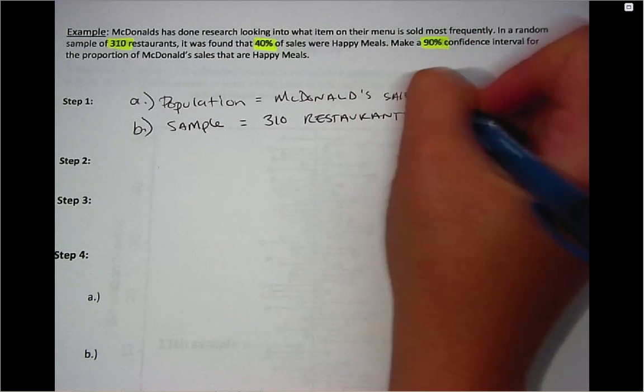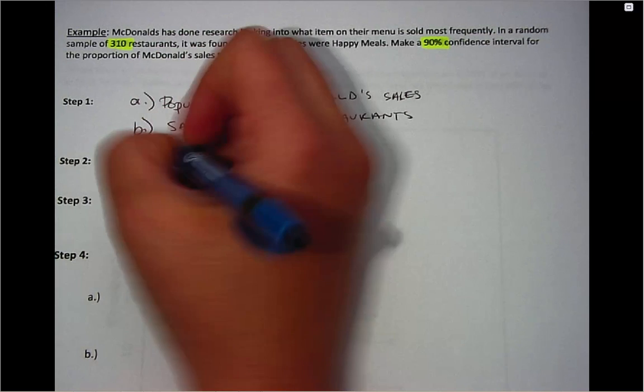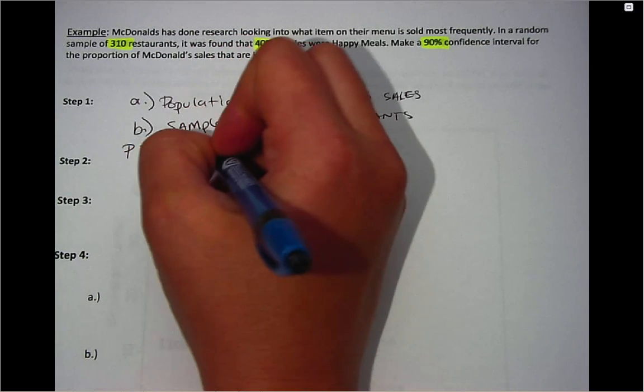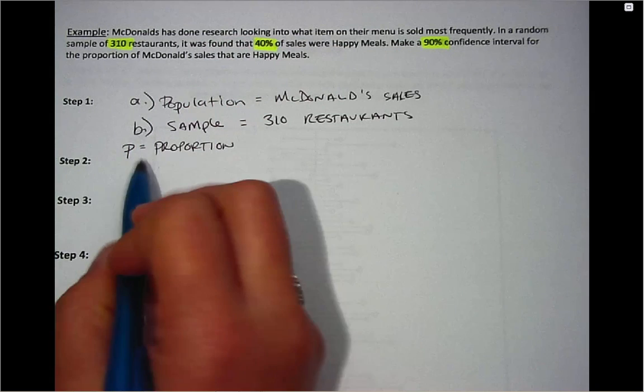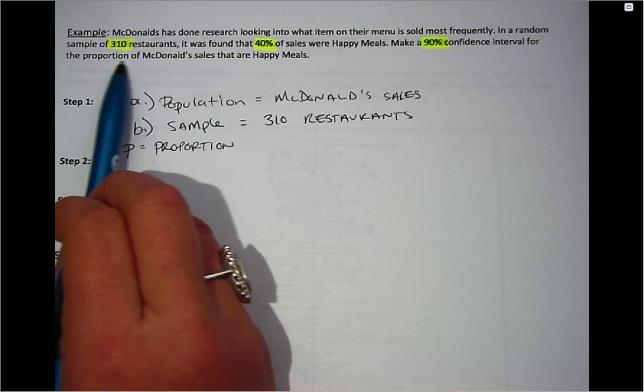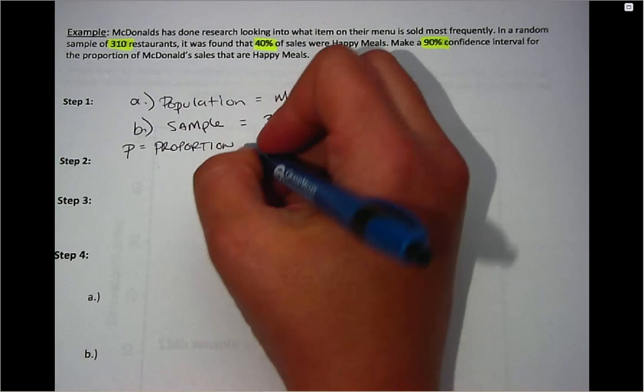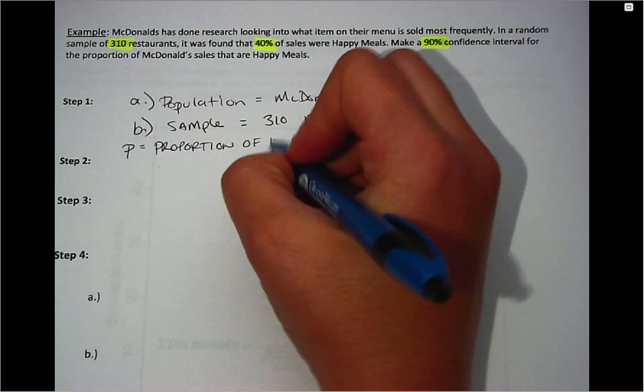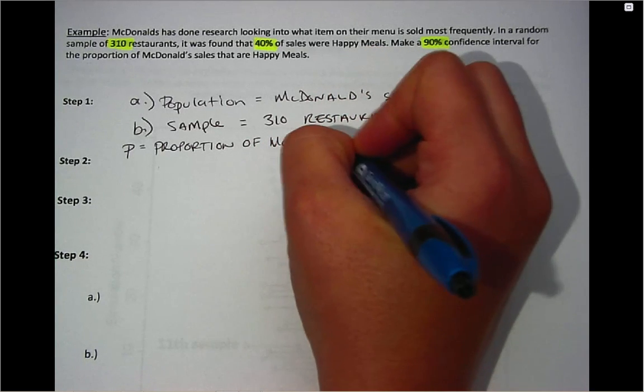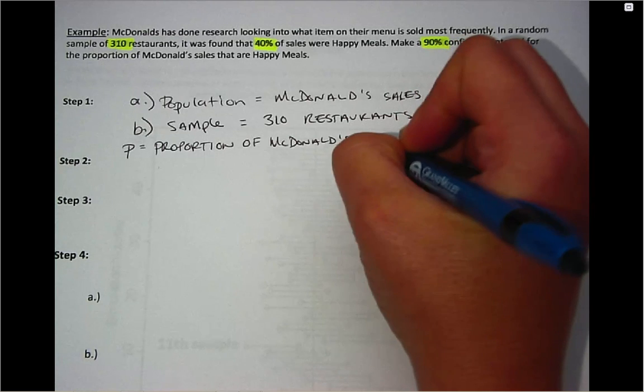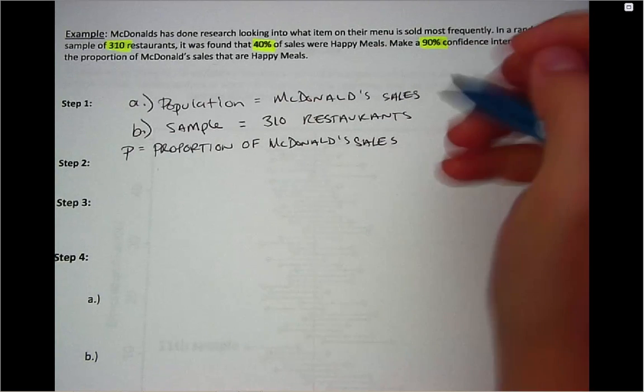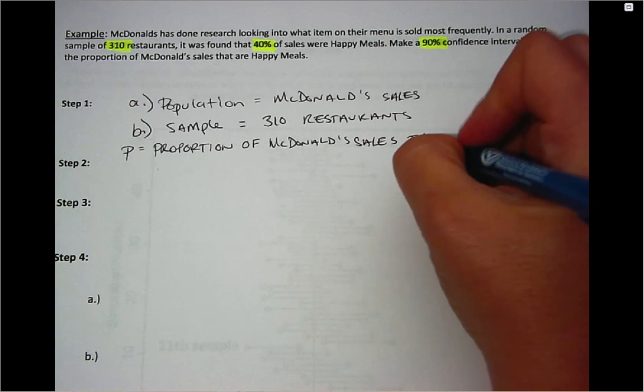And then as we did in the last video, I want to define my parameter of interest. So we always start with P equals proportion or percent or probability depending on what's stated. Here it's stated to be proportion. So it's proportion of, and my population is McDonald's sales, and then my success is if they're Happy Meals. So proportion of McDonald's sales that are Happy Meals.